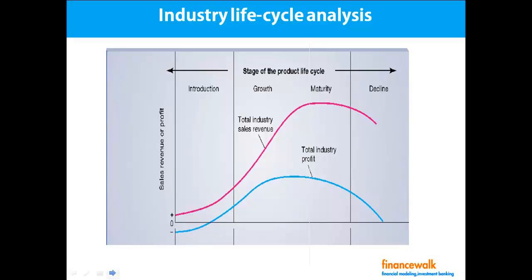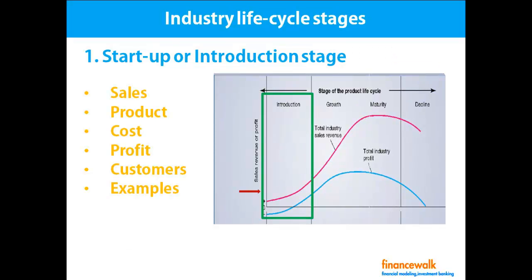Industry life cycle analysis. In this figure you will see there are four stages: first is introduction, second is growth, third is maturity, and fourth is decline. The pink line represents total industry sales revenue and the blue line is total industry profit. We will check different stages of the industry life cycle using these variables, and we'll start with the first stage — the startup or introduction stage.